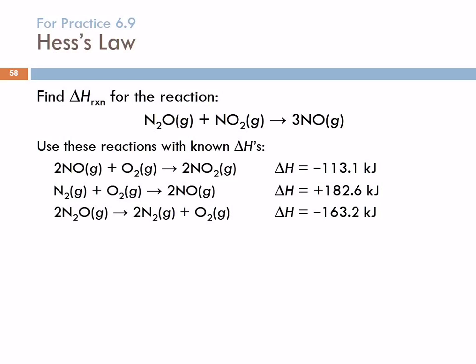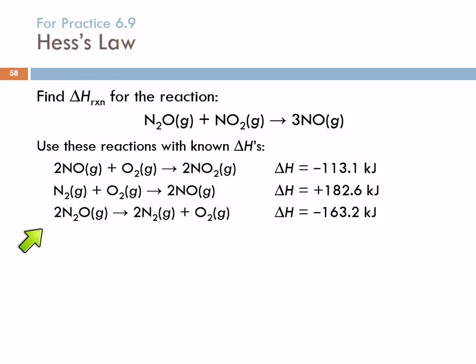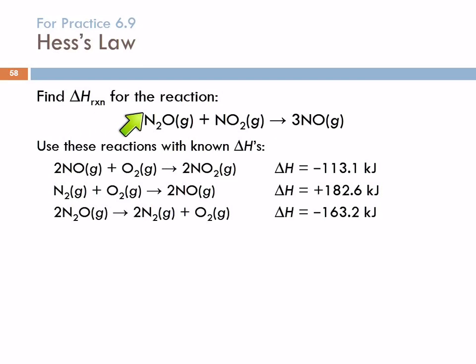And that's called Hess's Law. Here's an example of Hess's Law: find the heat of reaction for this reaction. We are given three other reactions where ΔH is known, and we have to figure out what combination of those reactions would add up to the target reaction.